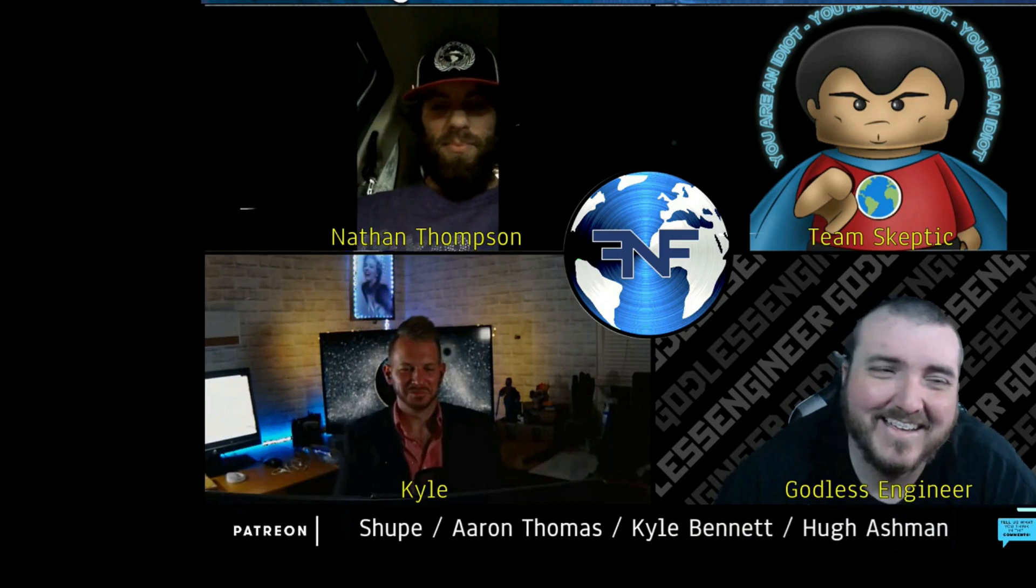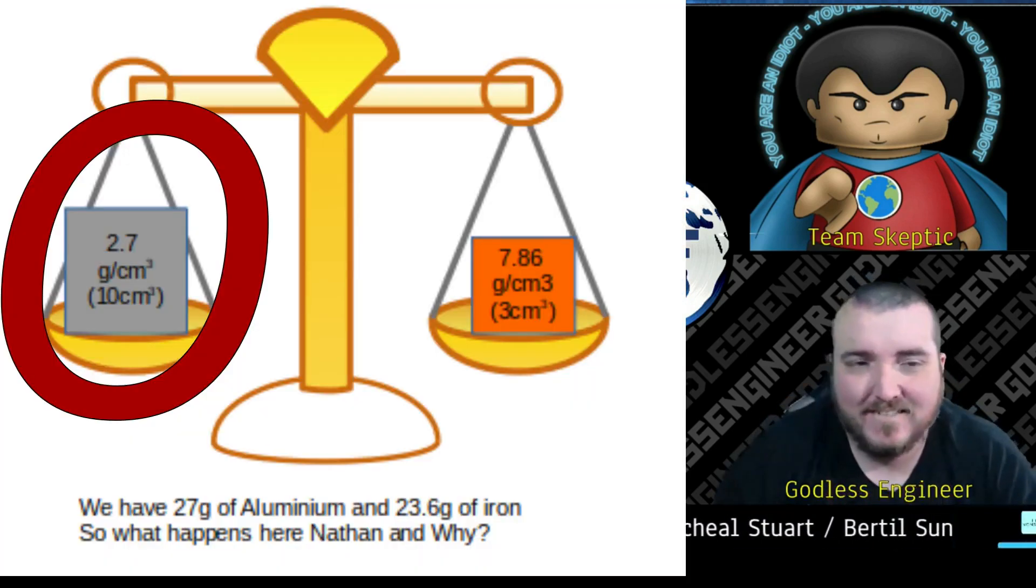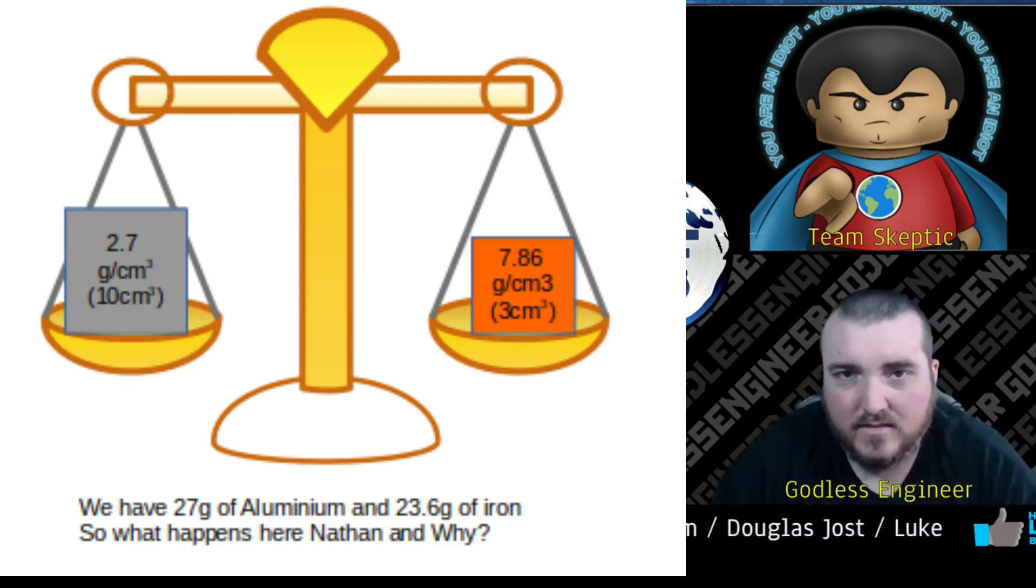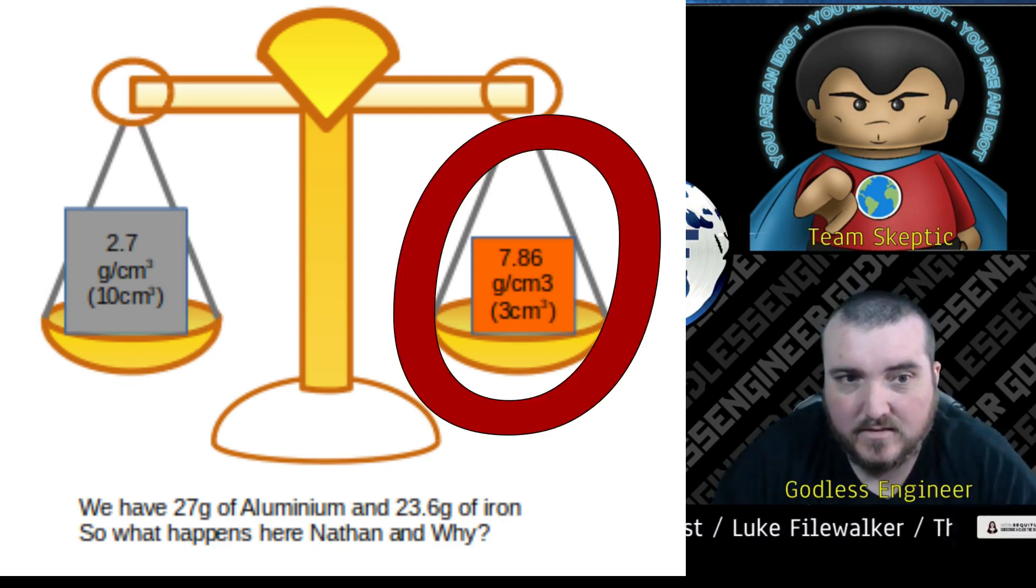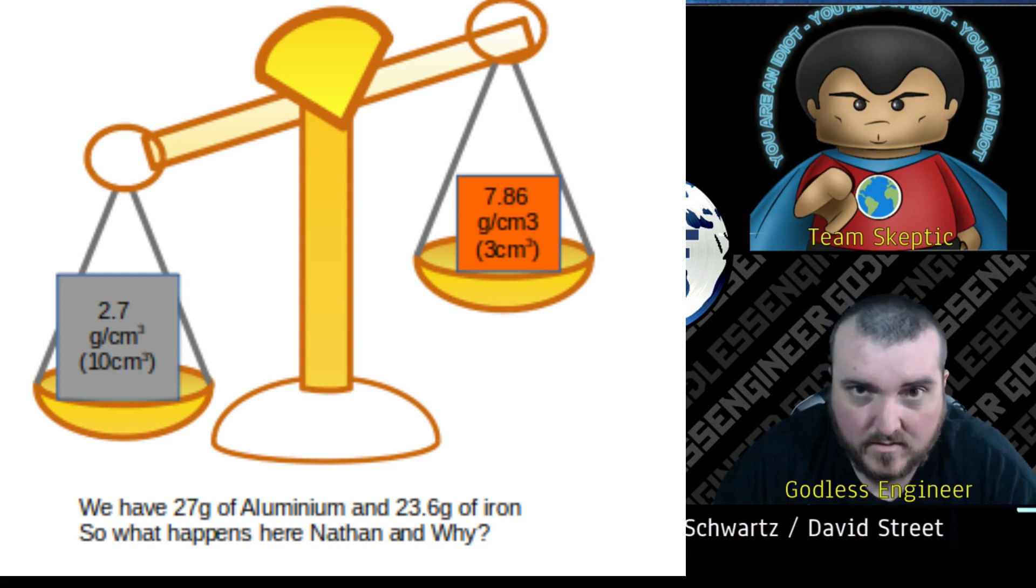If we take a less dense object and we put more of the less dense object on a balanced beam, and we have a more dense object on the other side of the balanced beam, why will the less dense but more massive object push that balanced beam down even though the other side of the balanced beam is more dense but less massive? Explain that to me if it's all about relative density.